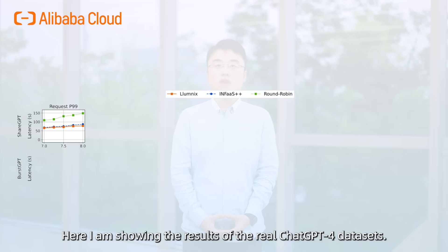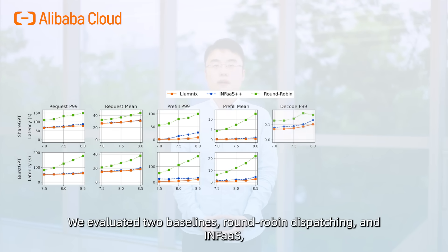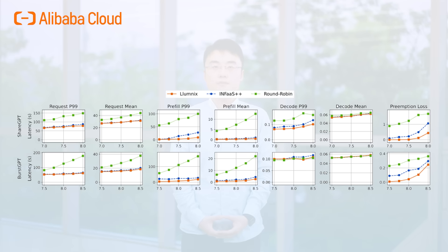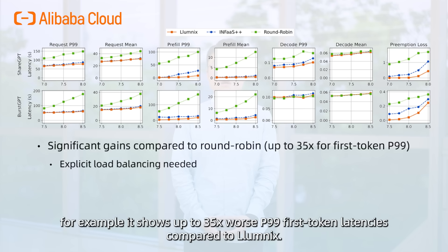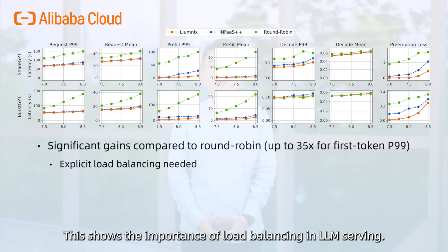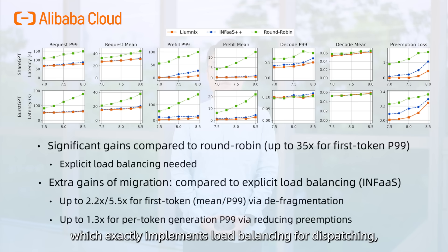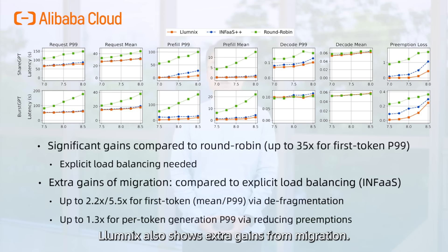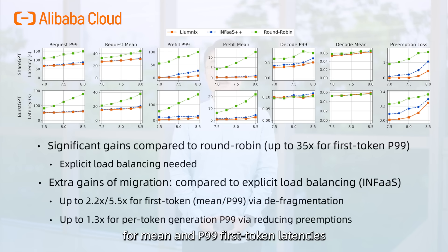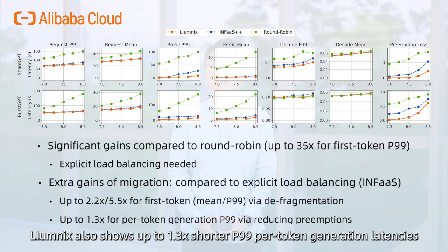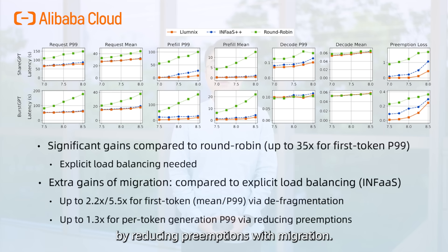We also evaluate the end-to-end serving performance using multiple traces. Here I'm showing the results of the real ChatGPT-4 datasets. We evaluated two baselines: round-robin dispatching and Infest, a dispatching policy that implements explicit load balancing of GPU memory. Round-robin always performs much worse — for example, it shows up to 35 times worse P99 first token latencies compared to Lumnix, showing the importance of load balancing in LLM serving. Compared to Infest, which exactly implements load balancing for dispatching, Lumnix also shows extra gains from migration: up to 2.2 times and 5.5 times gains for mean and P99 first token latencies via defragmentation, and up to 1.3 times shorter P99 per-token generation latencies by reducing preemptions.